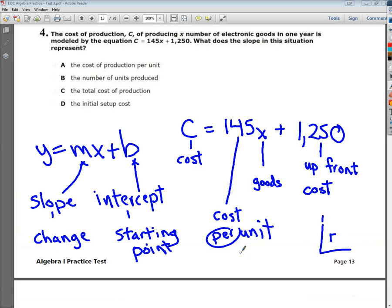Now, the answers are: the cost of production per unit, there you go. The number of units produced, that would be X, whatever I plug it in to be.